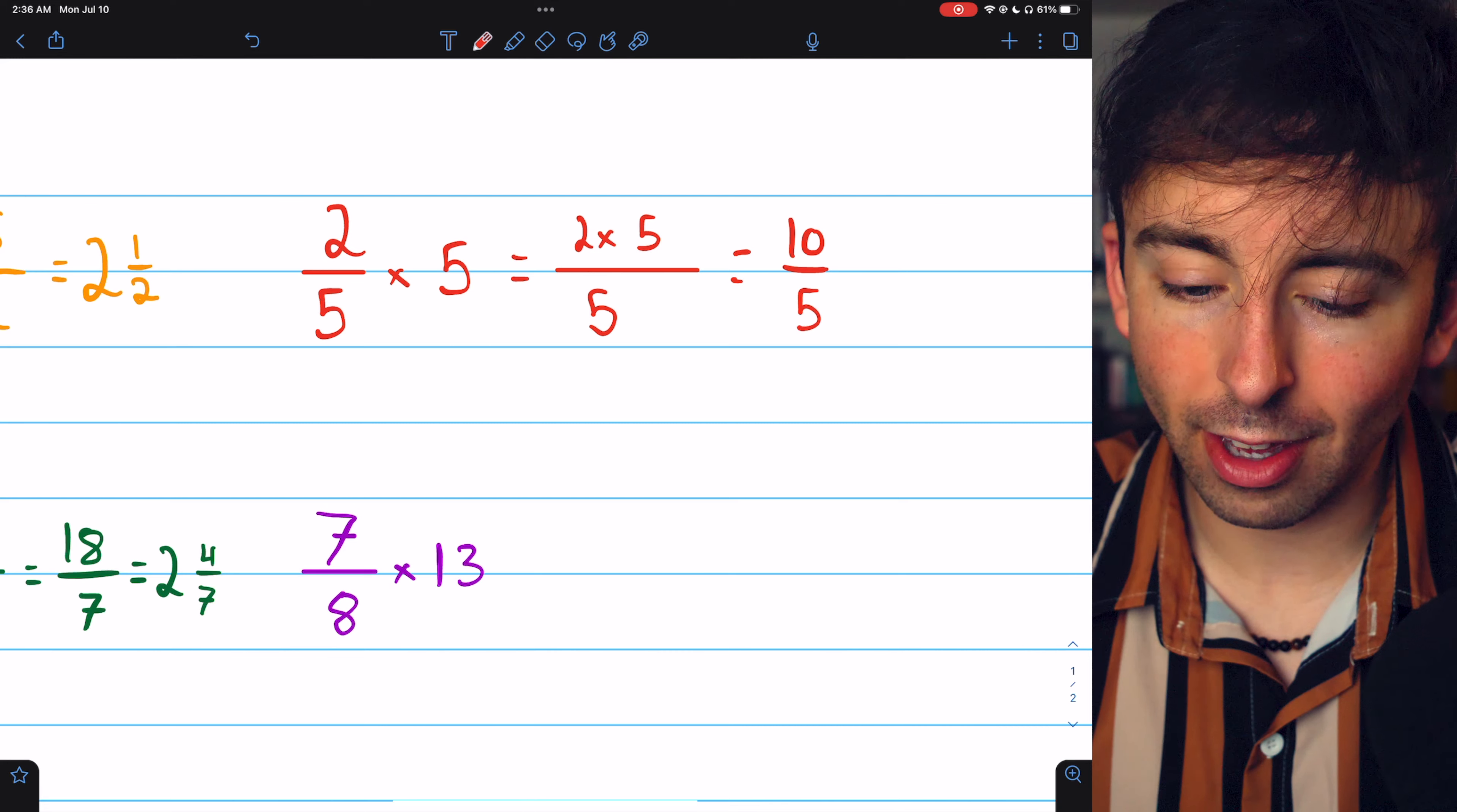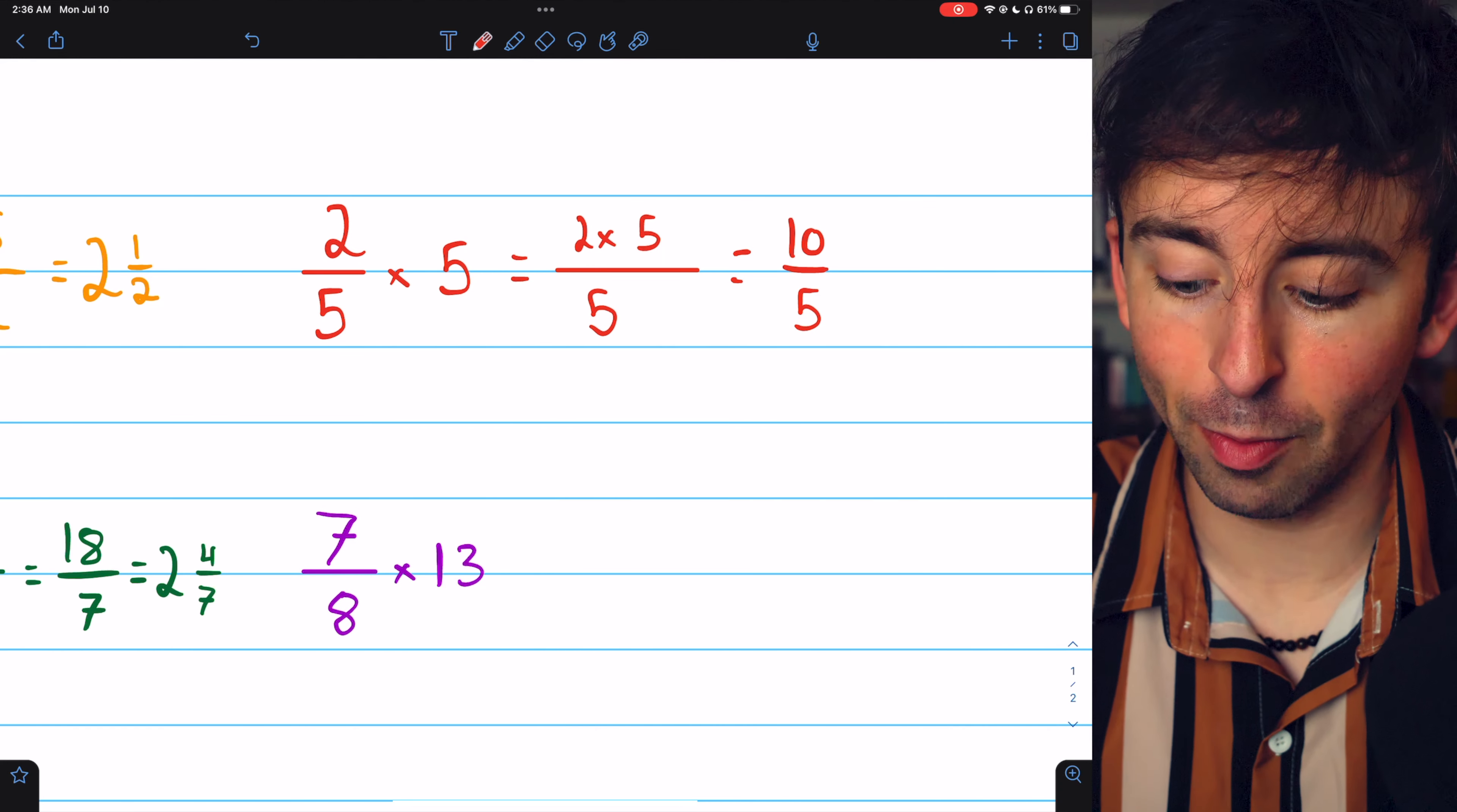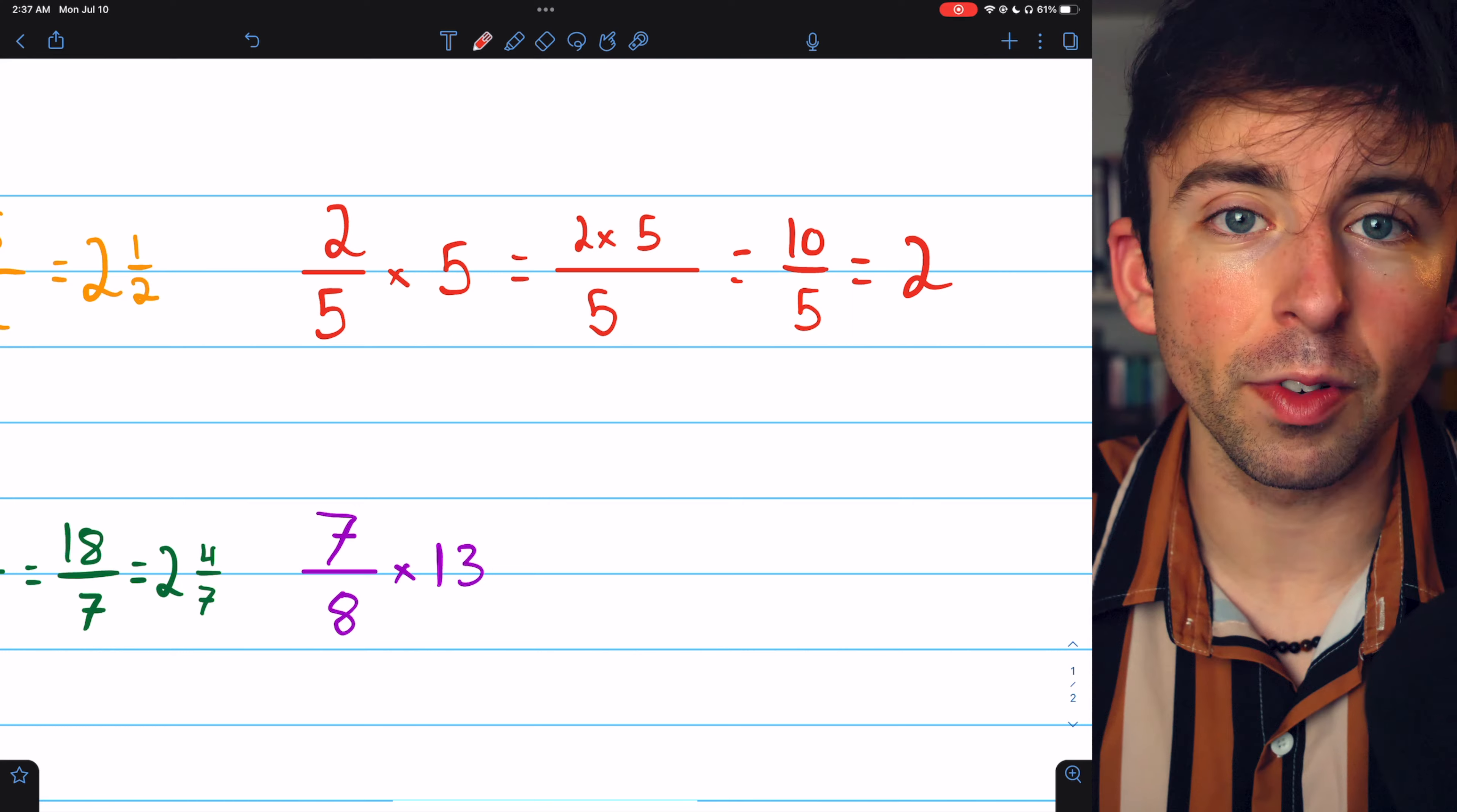If we have 2 fifths 5 times, that's 2 times 5 fifths. So 10 fifths. And we can reduce this to 2. 5 goes into 10 perfectly twice. 10 over 5 is 2.